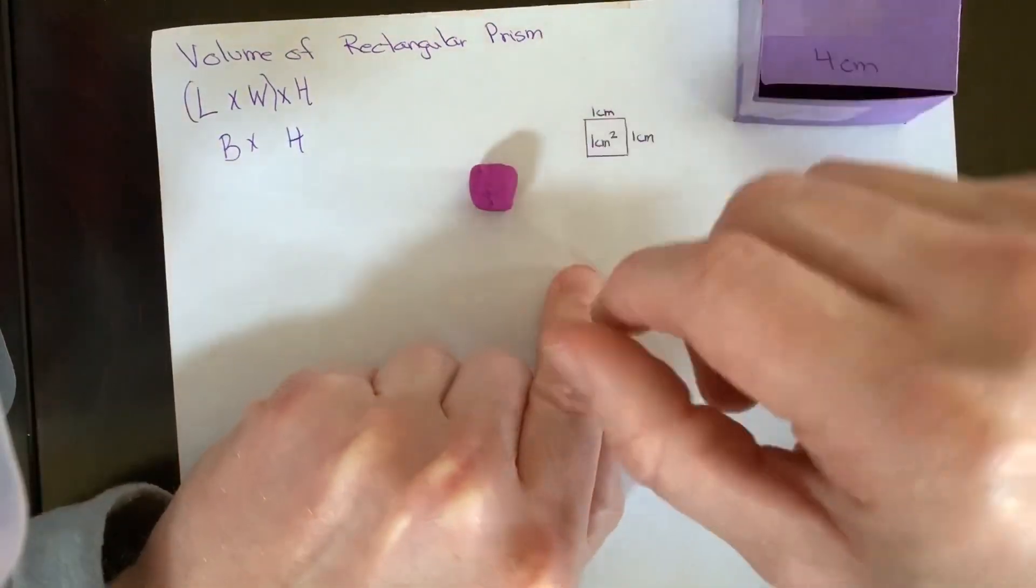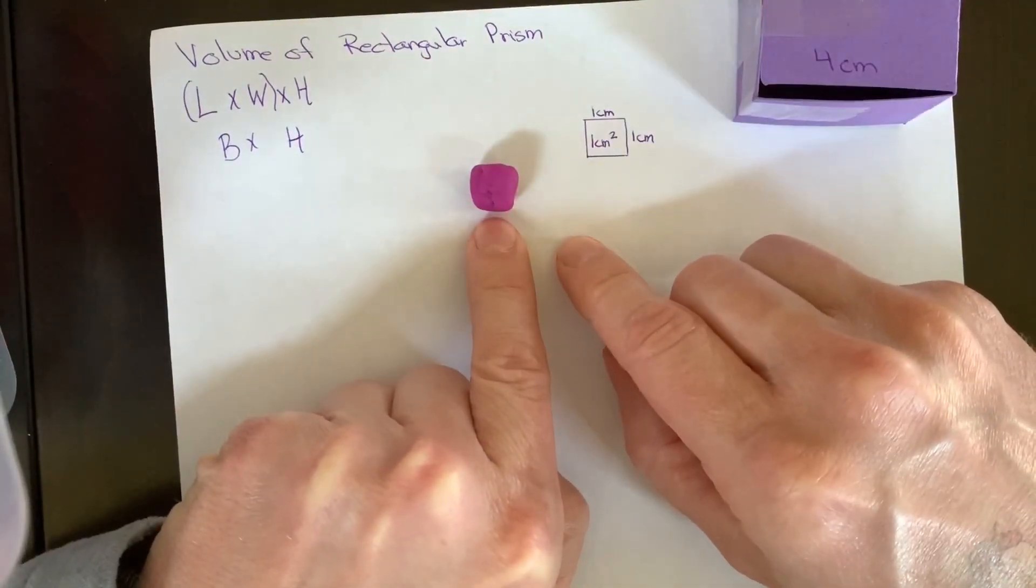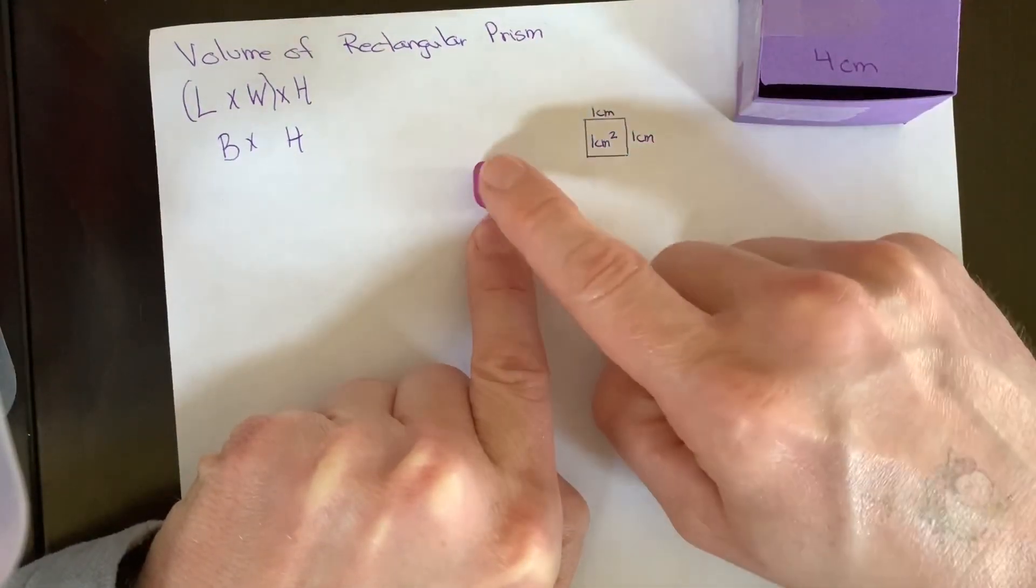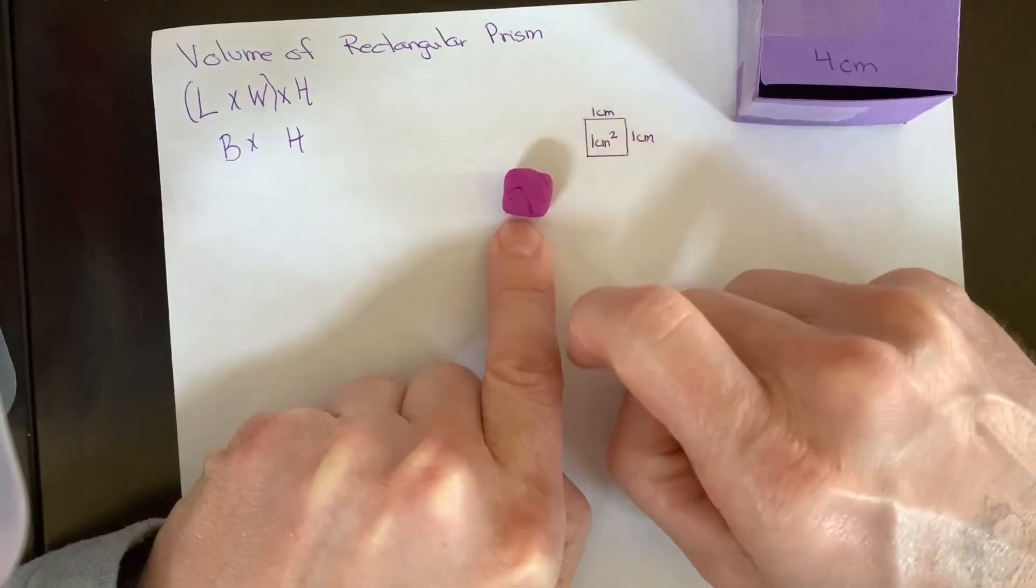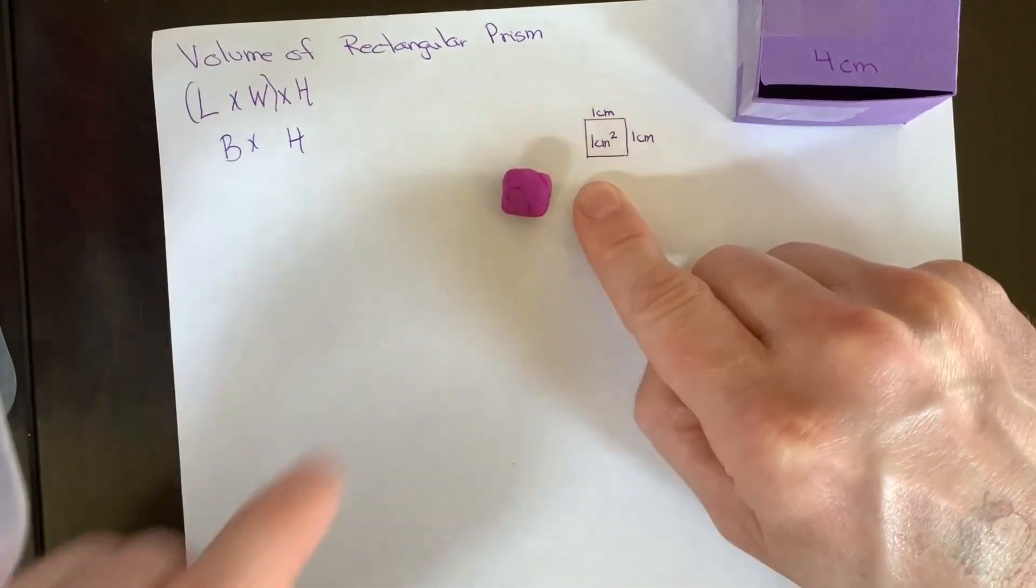If we are going to go into volume, it's three-dimensional. So this is one centimeter cubed, and we put the three on top to show that.